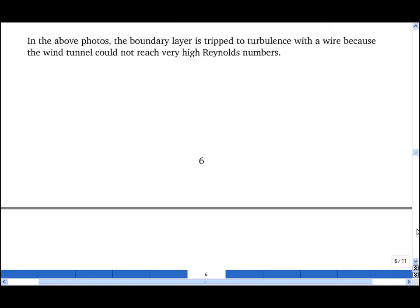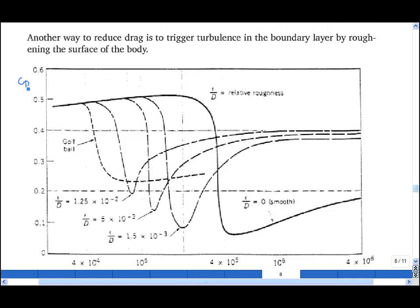Now returning to the original page, plotting here drag coefficient CD as a function of the Reynolds number for various roughnesses, quantified here by the roughness height relative to the diameter of the sphere.